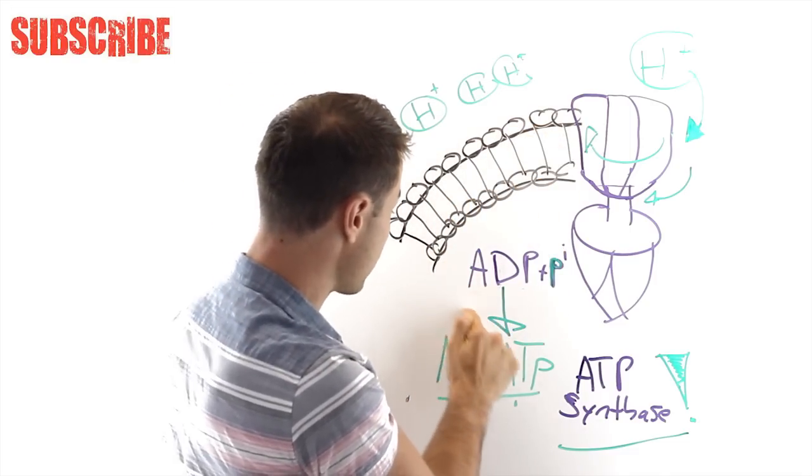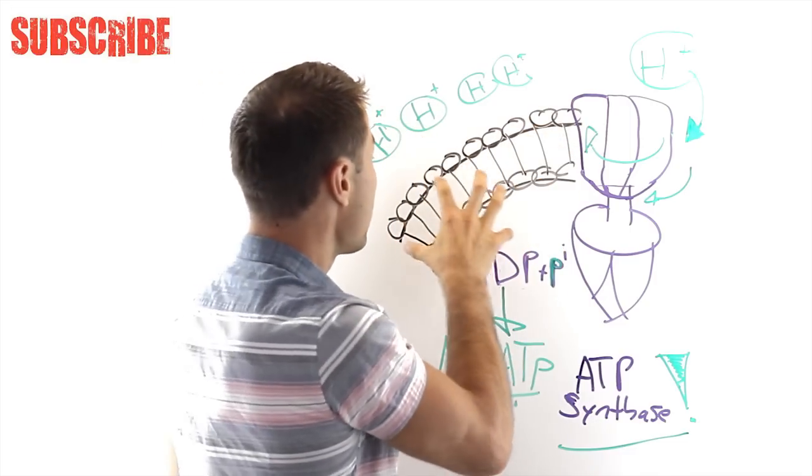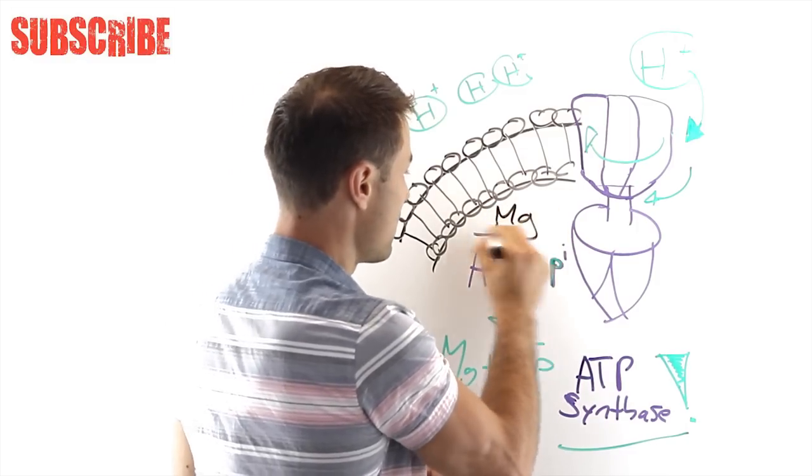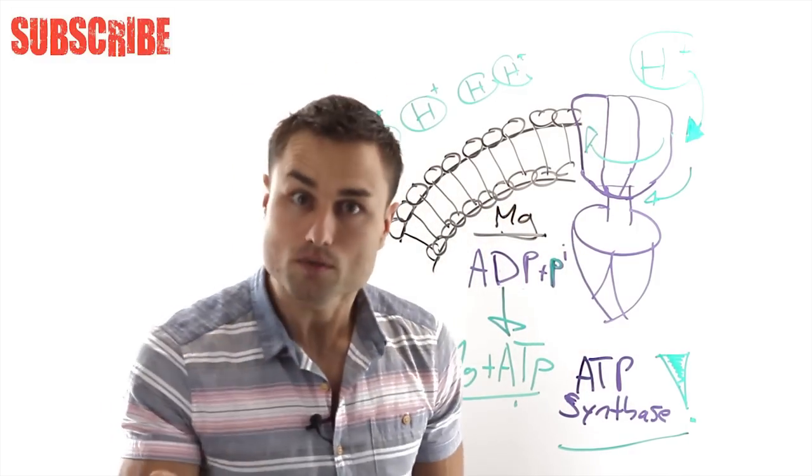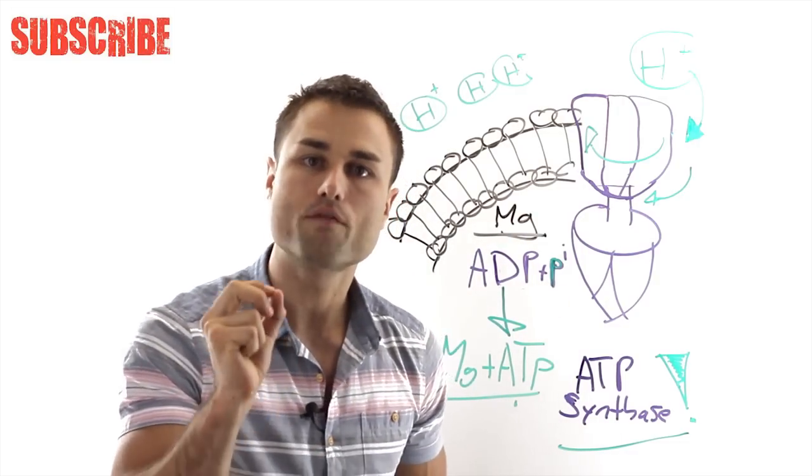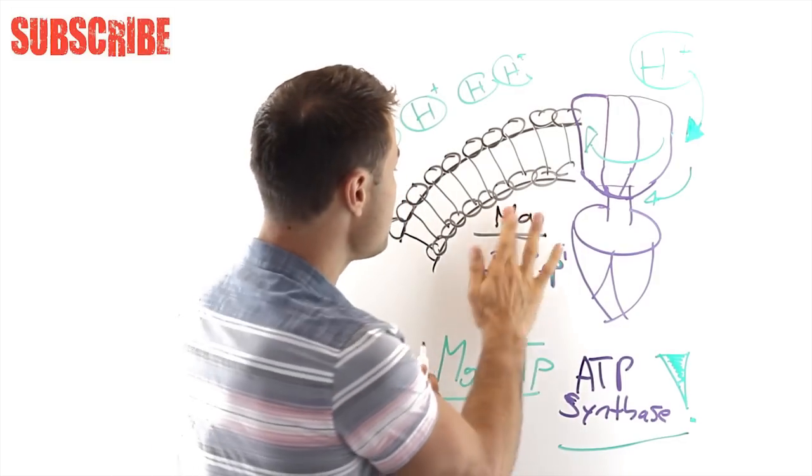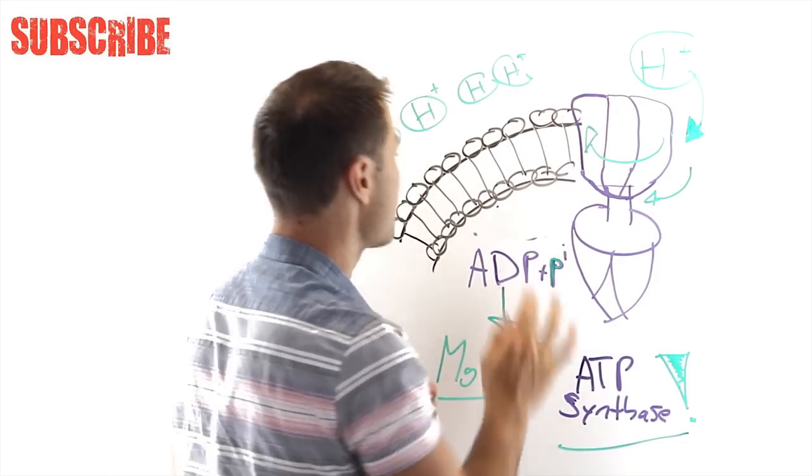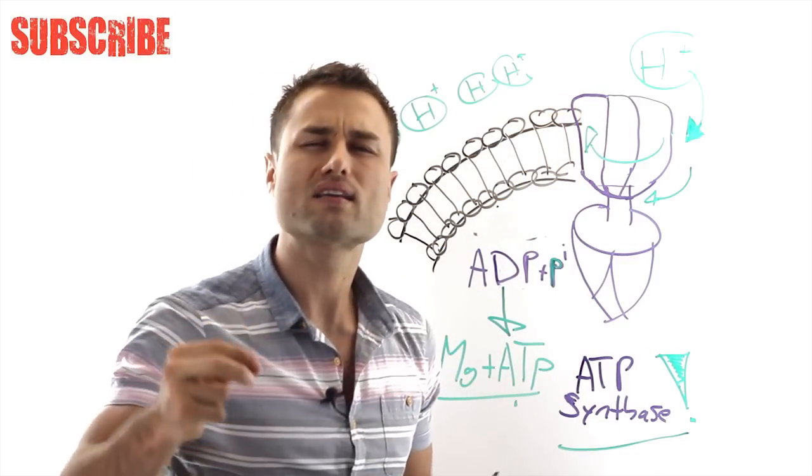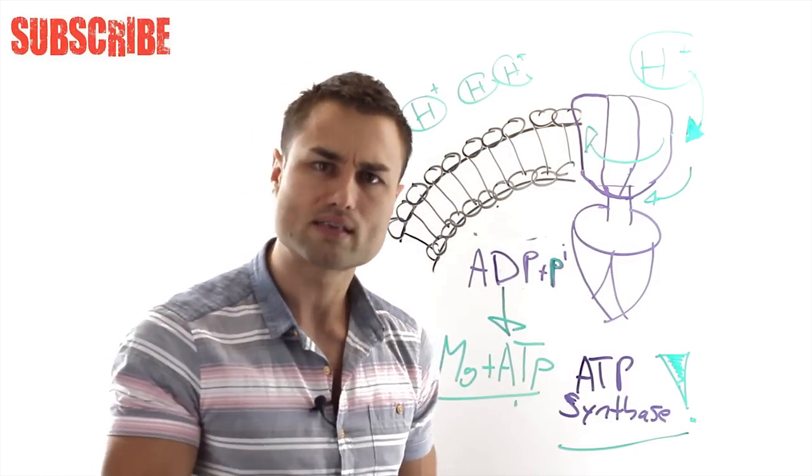But what happens is magnesium—put an Mg right here—magnesium is actually responsible for dictating the permeability, meaning the fluidity of your membrane. So if you have a decrease in magnesium, say no more magnesium, your cell membrane, the lipid bilayer, oxidizes and becomes rusty.